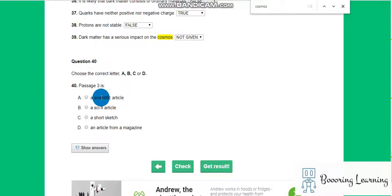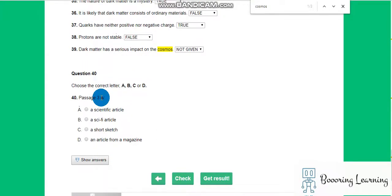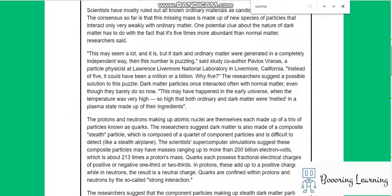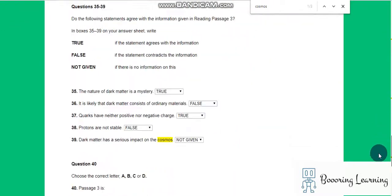Question 40: Passage 3 is—this is not a sci-fi, a short sketch, not an article from a magazine. A scientific article. Yeah actually the understanding of article is different. It can be article from a magazine too. It's not very scientific. I don't know. Is it true? It is true.